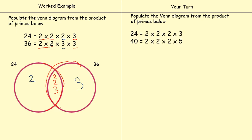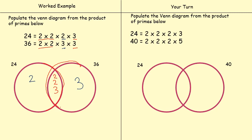So I'd like you to have a go at this question. 24 equals two times two times two times three, and 40 equals two times two times two times five. The left-hand circle equals 24 and the right-hand circle equals 40. Just have a go at that — pause the video and I'll explain how to do this in a minute. So hopefully you've had a go. We start by populating the centre where the two circles intersect. Two times two times two appears in both lists, so we write two, two, and two in the middle. Three is on its own in 24, so we write it on the left, and five is on its own in 40, so we write it once on the right. Your Venn diagram should have ended up looking like this.